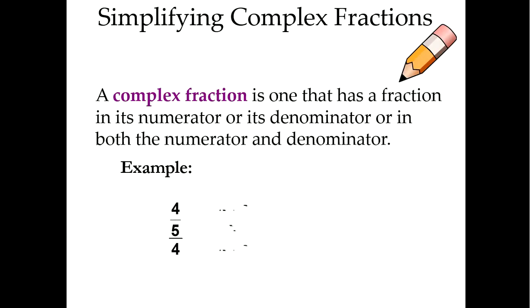So what does it mean to have complex fractions? Well, complex fractions is one that has a fraction either in its numerator or its denominator, or could be in both the numerator and denominator. So basically, they're going to look like something like this today — either you're going to have three bars or four bars between your numerators and denominators. They are a little creepy looking, but we can simplify them with our new rational expression knowledge that we've been practicing.